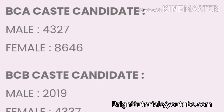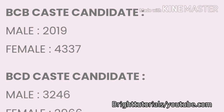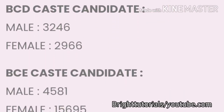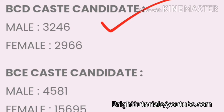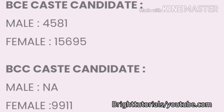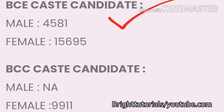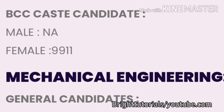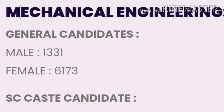For BCA caste in Civil Engineering: male cutoff is 4327 and female cutoff is 8646. For BCB caste: male cutoff is 4337. For BCD caste: male cutoff is 3246 and female cutoff is 2966. For BCE caste: male cutoff is 4581 and female cutoff is 15695.